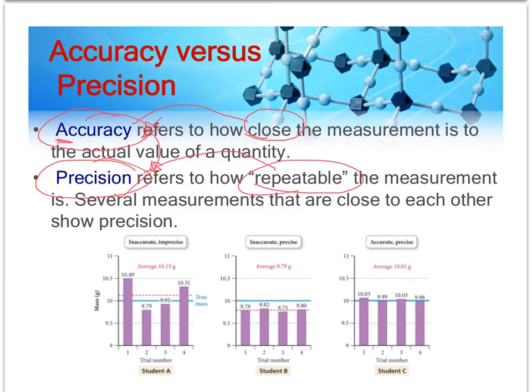Here's how I've remembered it: A for accuracy, C for close — they are close to one another in the alphabet, A and C. P for precision, R for repeatable — P and R are close to one another in the alphabet also. So precision — how repeatable — is what we're talking about for sig figs.